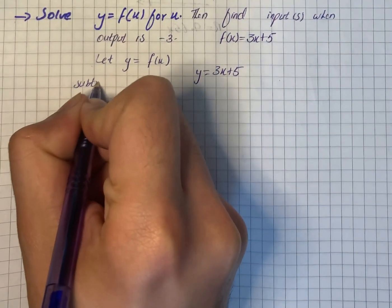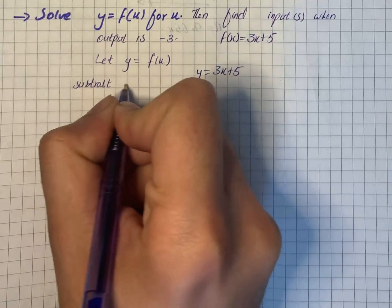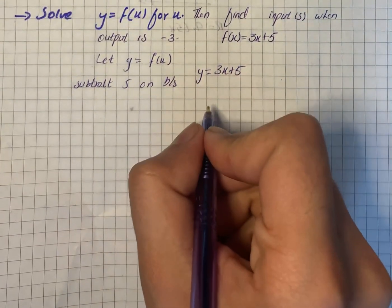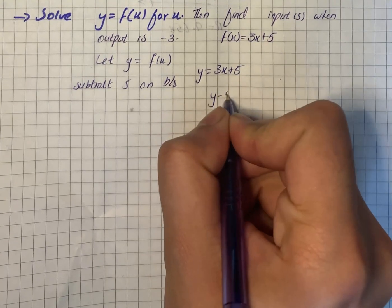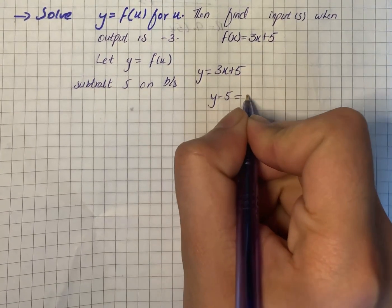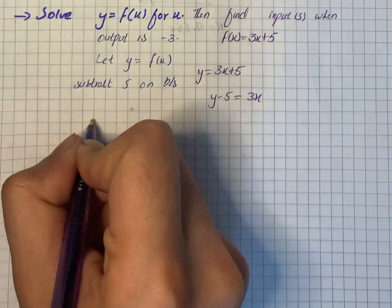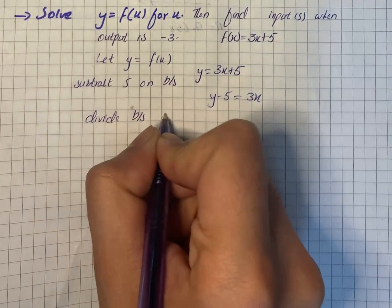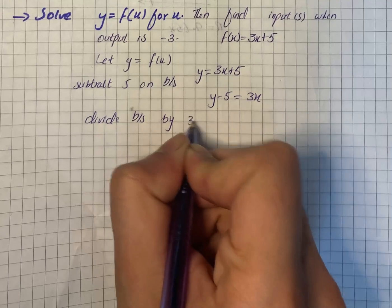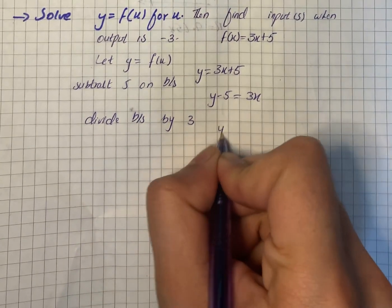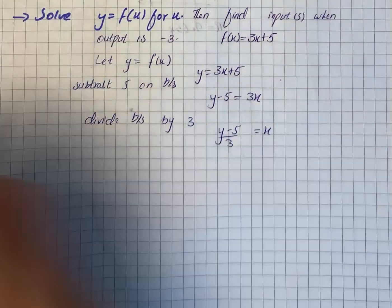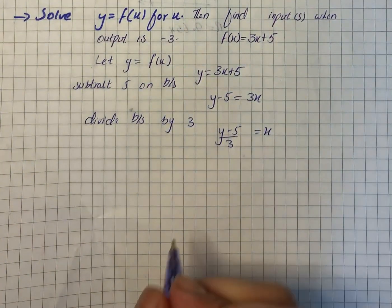We will subtract 5 on both sides. It will give us y minus 5 equals 3x. Now we will divide both sides by 3, so y minus 5 by 3 equals x, or we can write that x is equal to y minus 5 by 3.